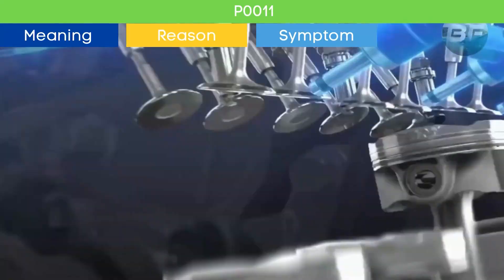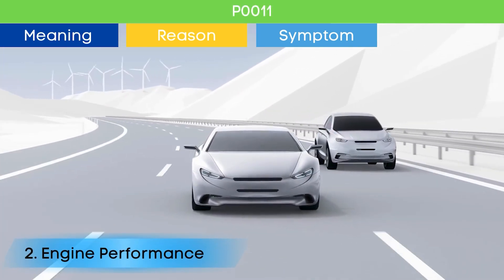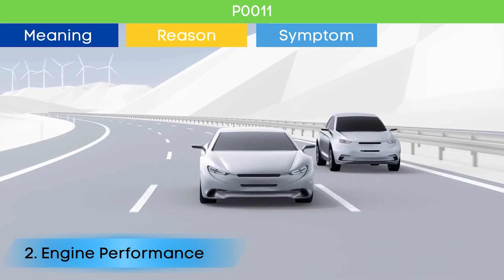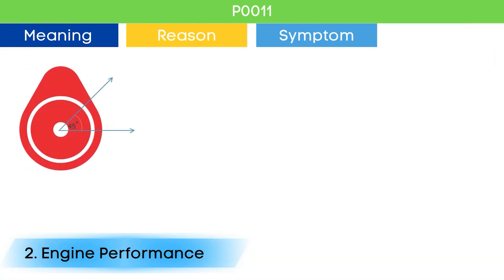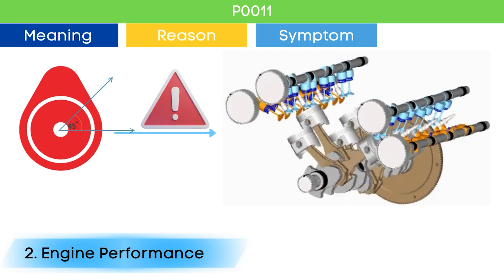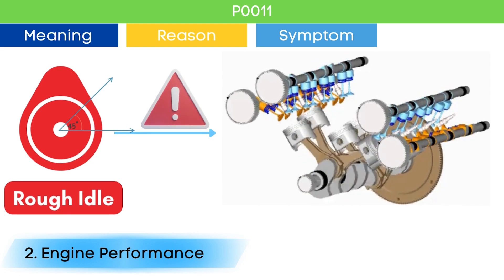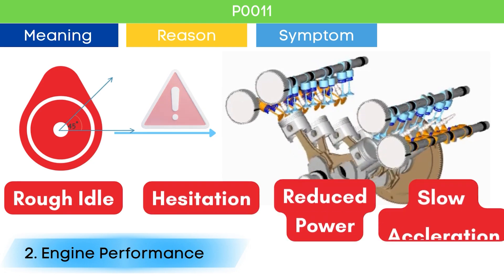Symptom number one: Check engine light. The check engine light comes on if there are any active trouble codes related to EMS. Symptom number two: Poor engine performance. Problems in the cam position actuator circuit can lead to incorrect cylinder valves opening and closing. This can manifest as rough idle, hesitation, reduced power, and sluggish acceleration.